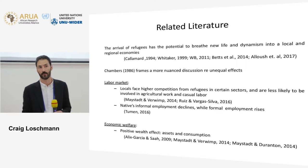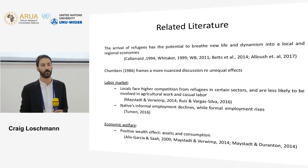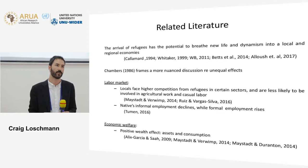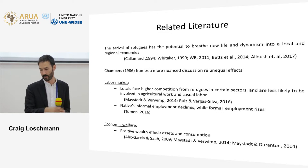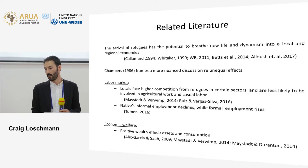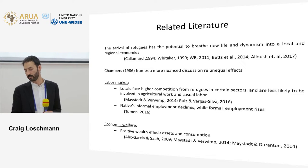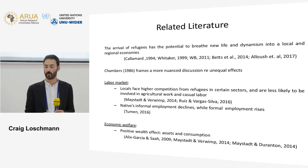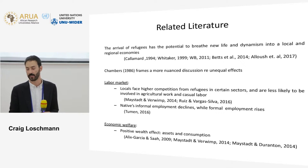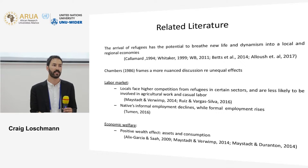Some more empirical papers look specifically at labor market and economic welfare outcomes. One paper by Isabel and co-author Carlos finds that locals face higher competition from refugees in certain sectors and are less likely to be involved in agricultural work or casual labor. Another paper on Syrian refugees around the Turkish border by Tumen finds that natives' informal employment declines with the presence of refugees while their formal employment rises — a substitution effect once a population moves in with various skills.